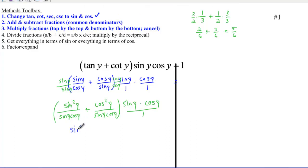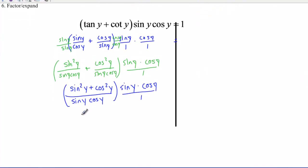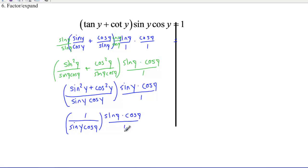The numerators are sine squared y plus cosine squared y — that's ringing a bell, because that's the granddaddy formula, the Pythagorean identity. The denominator is sine y cosine y, and I still have sine y cosine y outside. I go ahead and replace sine squared plus cosine squared with 1 by our Pythagorean identity. That gives me 1 over sine y cosine y, times sine y cosine y over 1. I've added using common denominators, and now the last step is to multiply fractions.